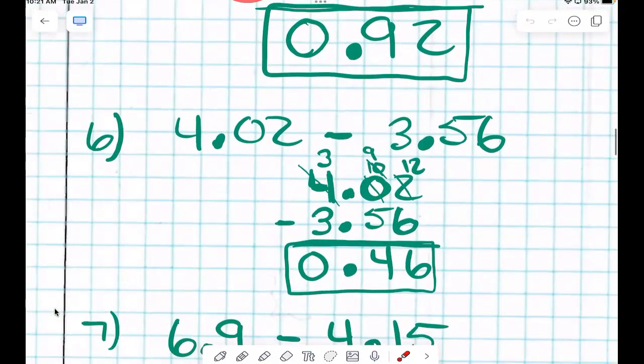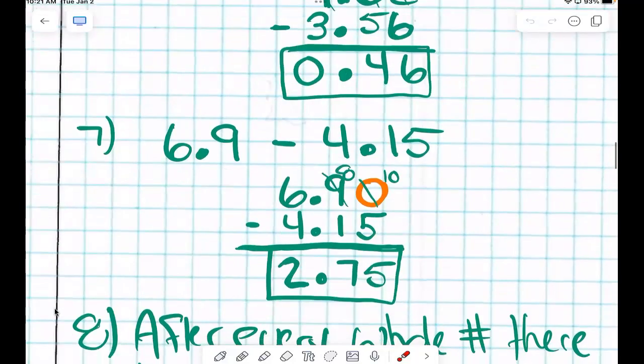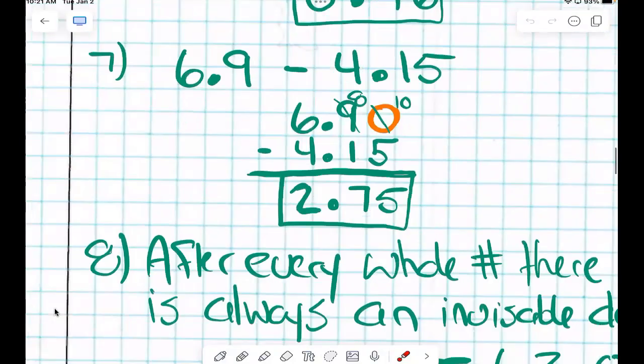Another example down here. 4 and 2 hundredths minus 3 and 56 hundredths. Again, you're going to line up your decimal point by stacking the numbers. Stacking the numbers.